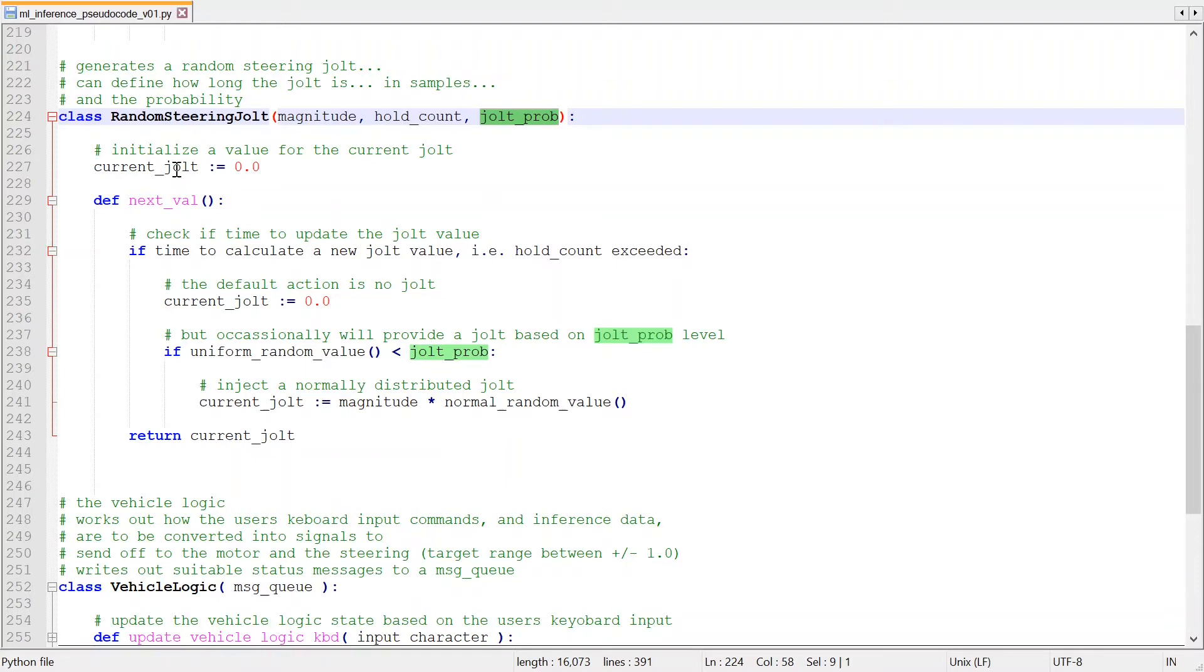The class holds an internal variable to store the current value. And it has a single method, nextval. This gets called in the main control loop to deliver the next value of the jolt.